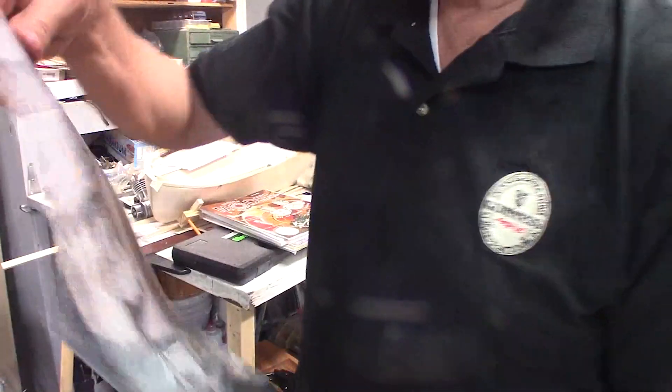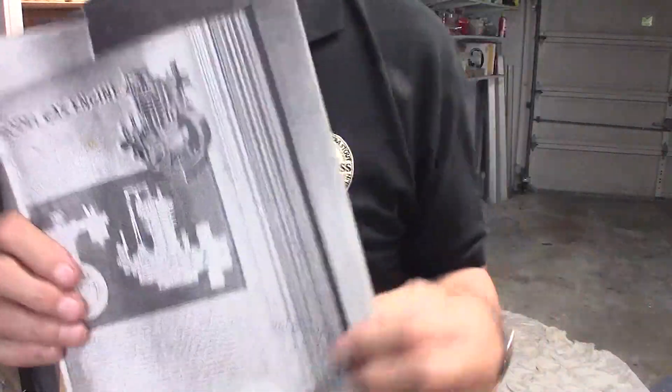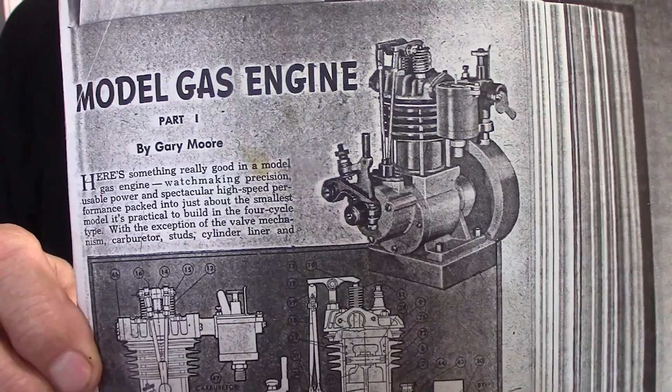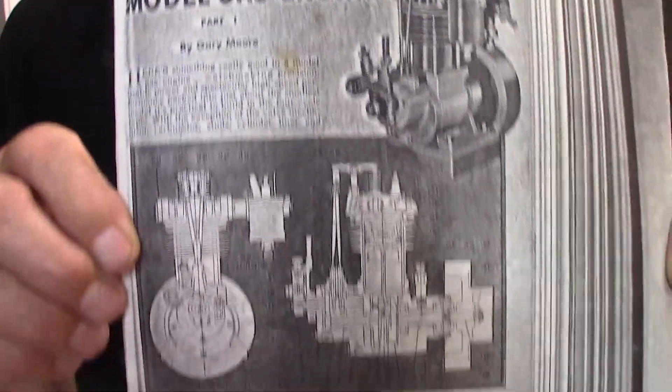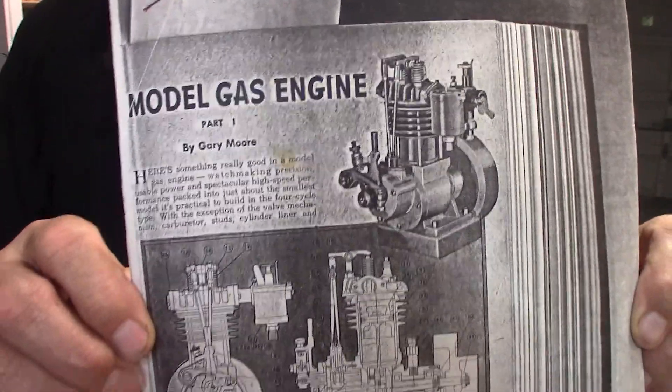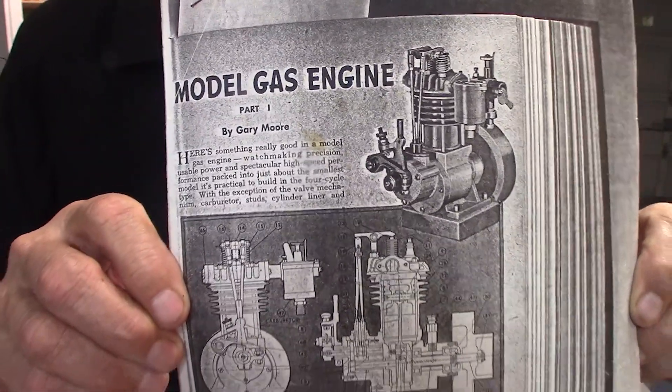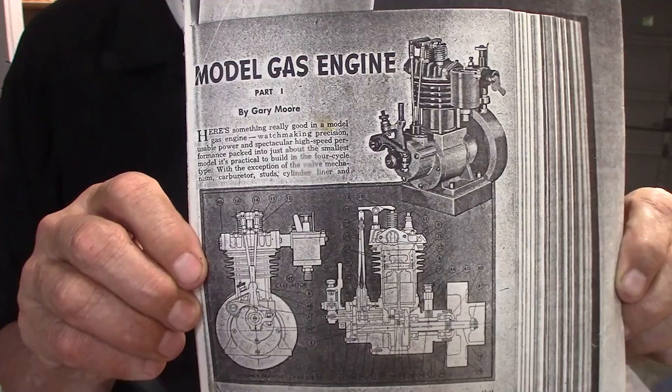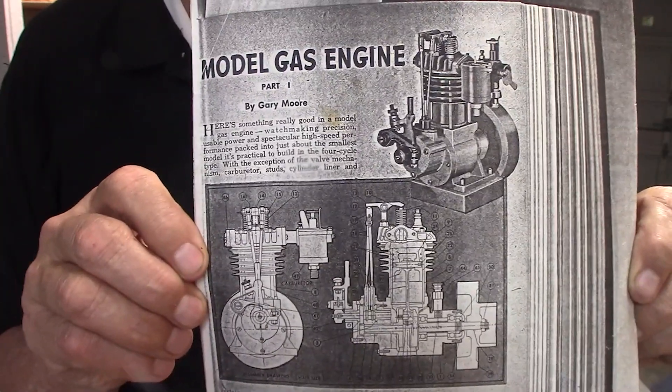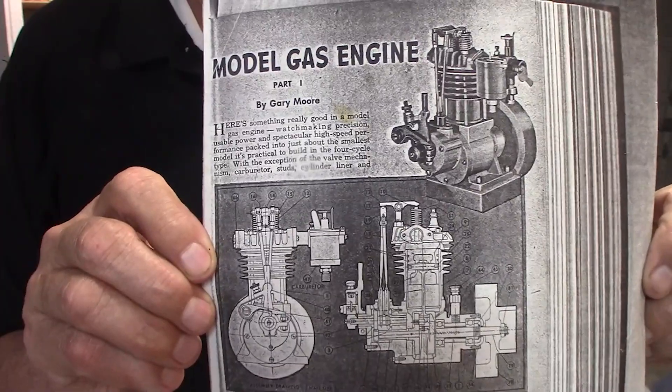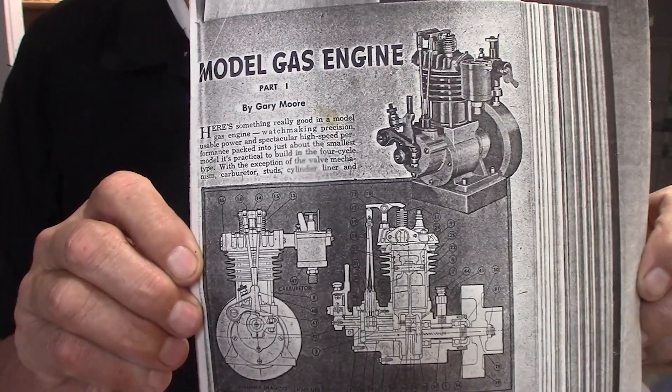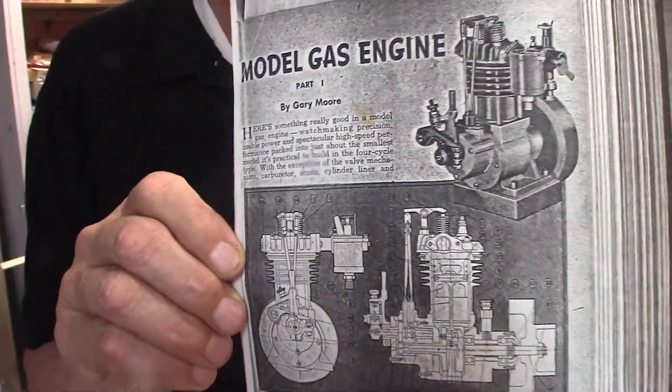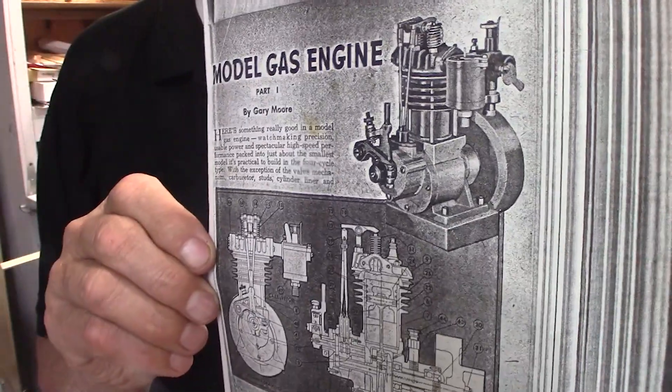By the way, here's a copy I have. I copied this out of the library years ago from the microfiche. This was the 10cc model gas engine. The drawings for this engine - very accurate, they're tiny. You're going to need a magnifying glass. But the drawings are in this issue of 1946 Popular Mechanics magazine.